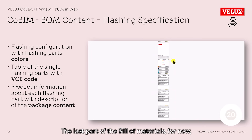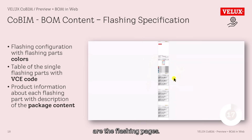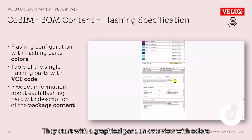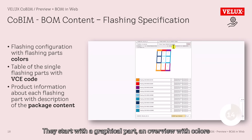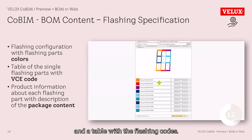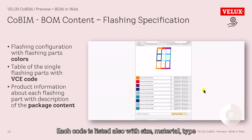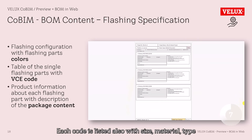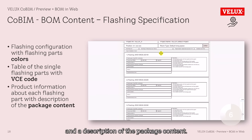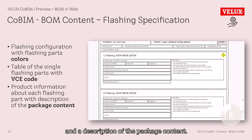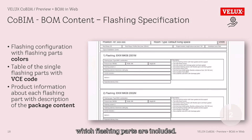The last part of the Bill of Materials, for now, are the flashing pages. They start with a graphical part — an overview with colors — and a table with the flashing codes. Each code is listed also with size, material, type, and a description of the package content. Sometimes it is good to know exactly which flashing parts are included.